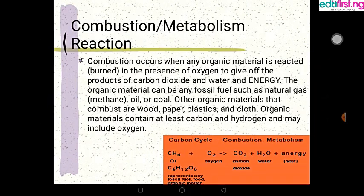Now the next one is metabolism which is making use of oxygen, burning an organic compound to produce carbon dioxide and water, then giving out heat energy. So the organic material can be any fossil form such as natural gas, methane, oil, or coal. Other organic materials that combust are wood, paper, plastic, and float.